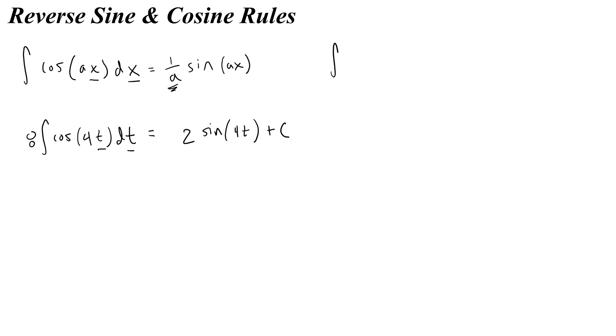What about sine? Well, they give us the rule for sine as the integral or antiderivative of sine ax with respect to x is equal to negative 1 over a cosine ax, which is helpful because it's hard to remember whether or not the derivative of sine and cosine is negative and whether or not the antiderivative of sine or cosine is negative. But the AP equation sheet has this for you. So you can always look at the equation sheet and remember which one is supposed to be negative. So here, the antiderivative of sine is negative cosine.